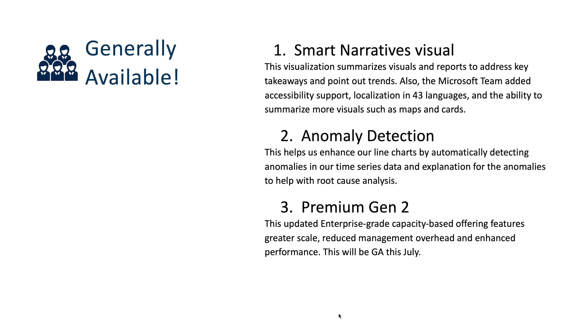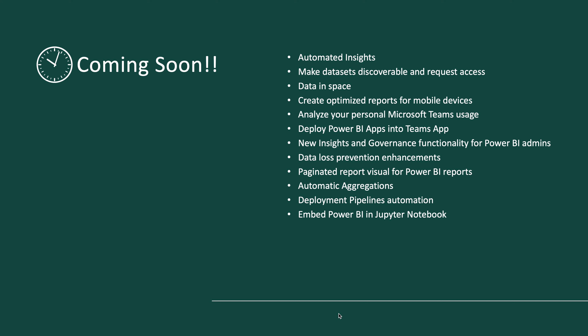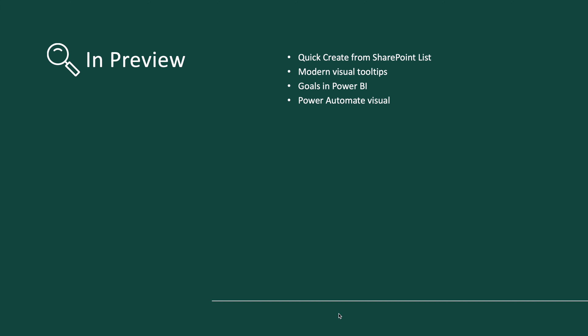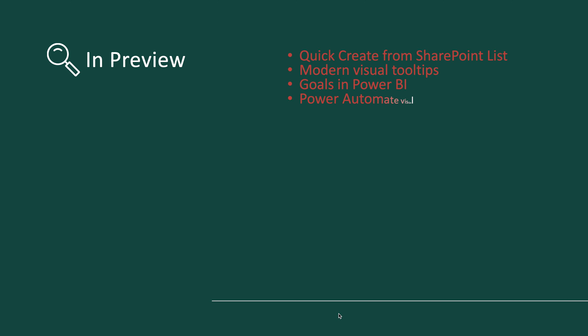Power BI Premium Gen 2 was available in preview only, but from July onwards it will be generally available. There are also certain features coming by the end of this year. Features currently in preview include quick create from SharePoint list, modern visual tooltips, goals in Power BI, and Power BI Automate Visual. These are available for you to test and provide feedback to the Microsoft team.